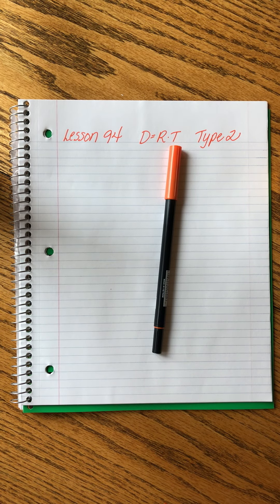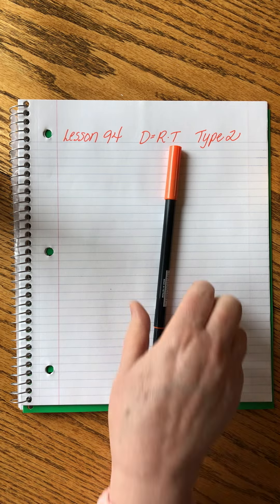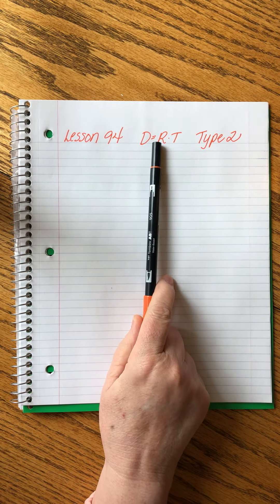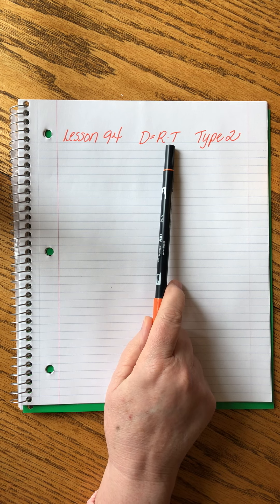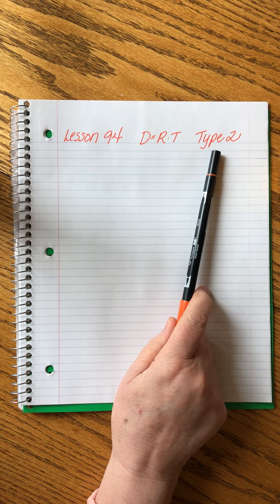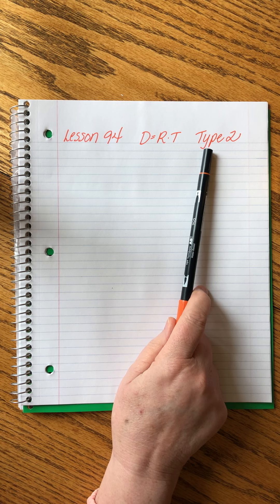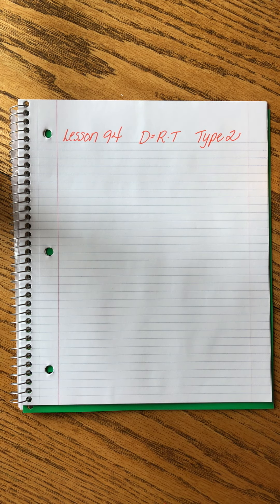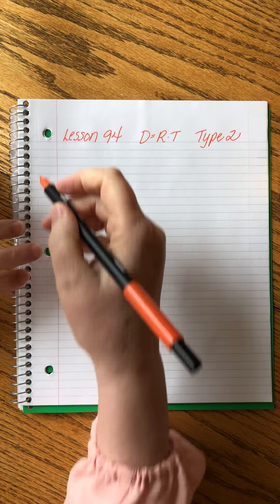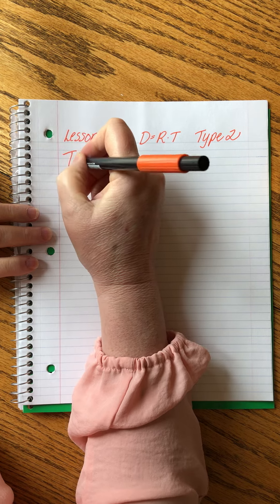Saxon Algebra 1 lesson 94. Today we're going to go back to those distance equals rate times time problems that we've been talking about and we're going to look at a second type.